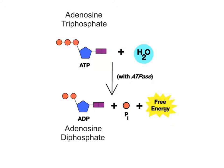Once ATP is hydrolyzed, the resulting product, ADP, is a more stable molecule because it contains two phosphate groups and less energy. The prefix di- means two. The free phosphate group released from this reaction can now be attached to another reactant or enzyme, or be used to synthesize new ATP molecules.